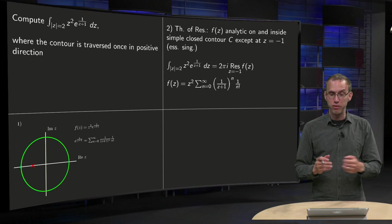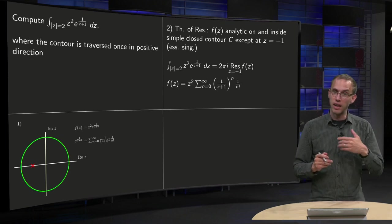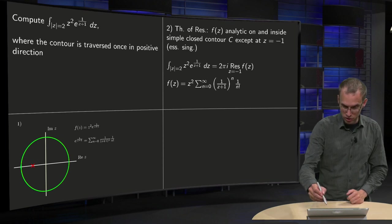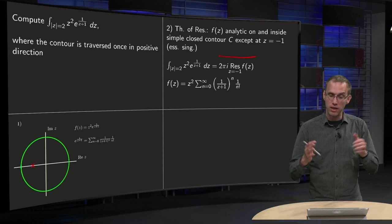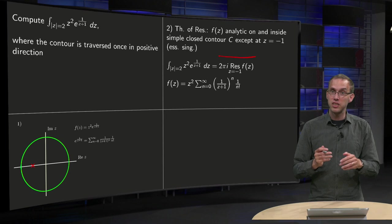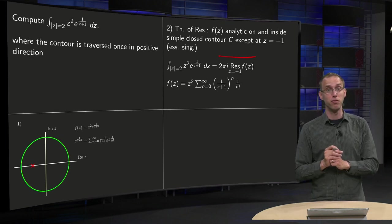If f of z is analytic on and inside a simple closed contour, then the integral equals 2 pi i times the residue, in this case in z equals minus 1, the only singularity. So f of z is analytic apart from this one point, so we can apply the theorem of residues.